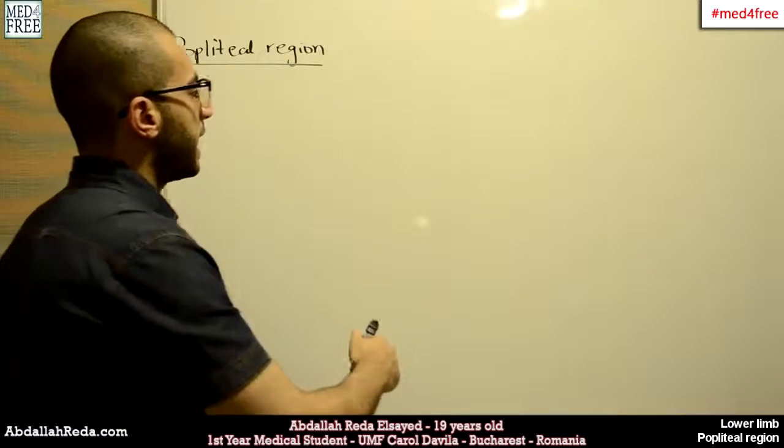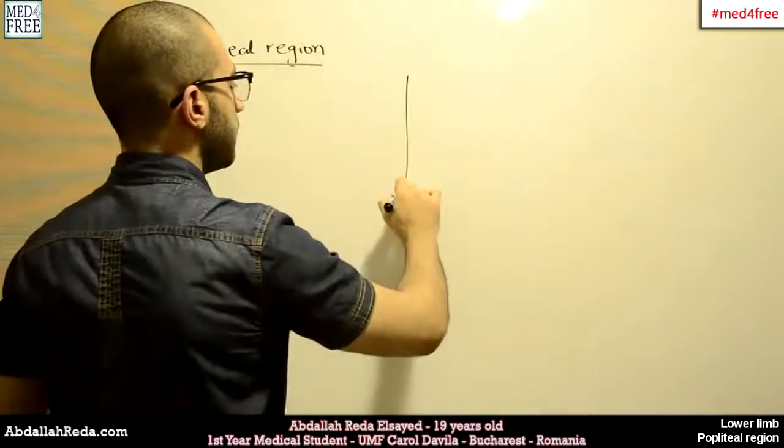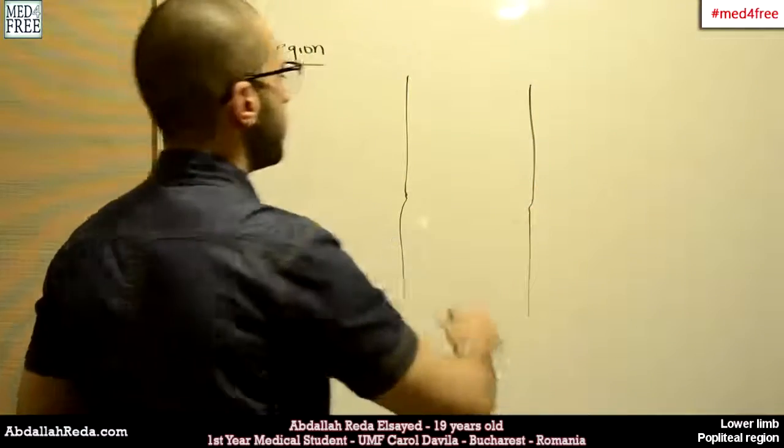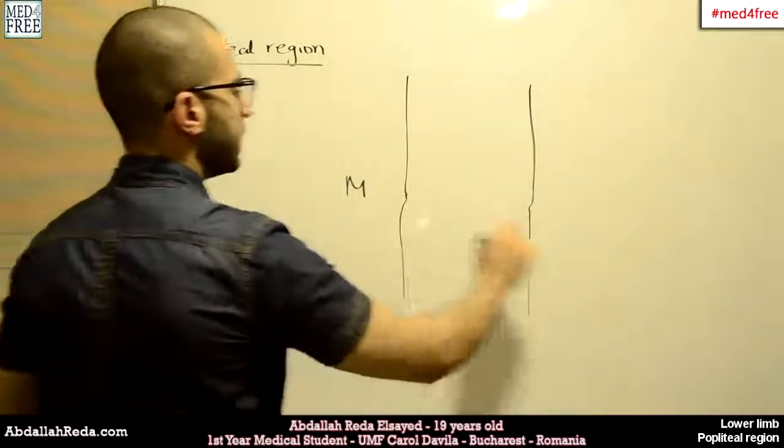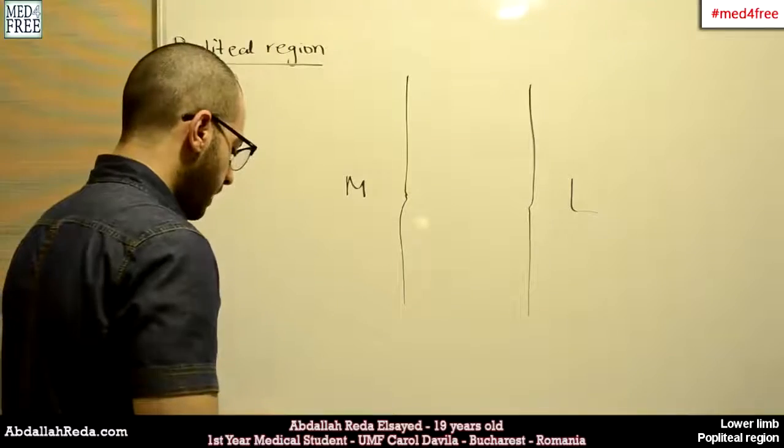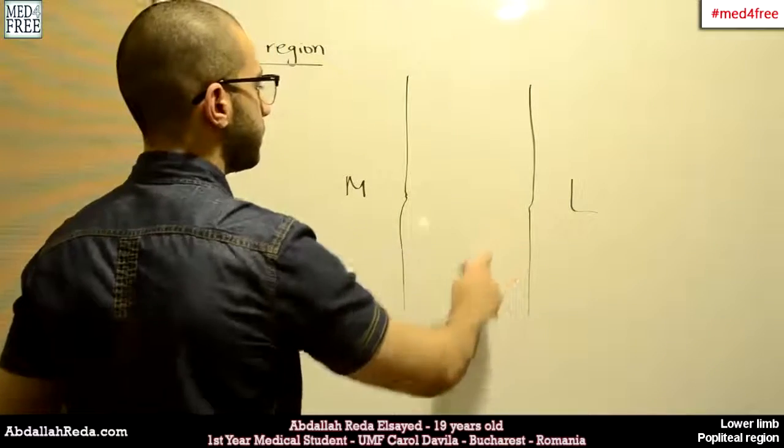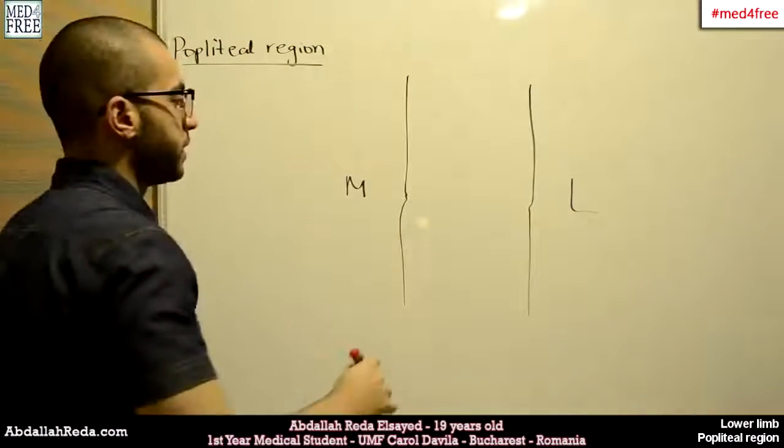So we will look at the posterior side of the right lower limb. This is medial and this is lateral, and the popliteal region is around here. Now what are the borders of the popliteal region?